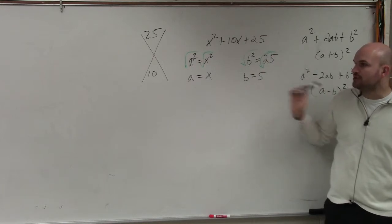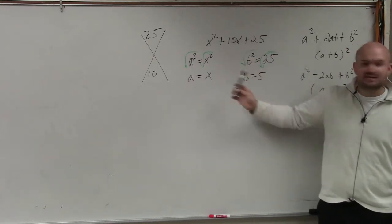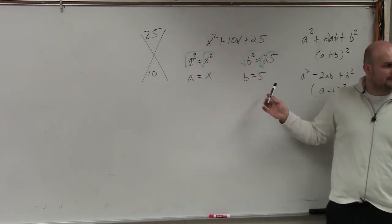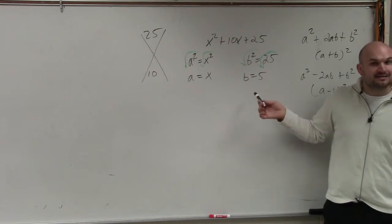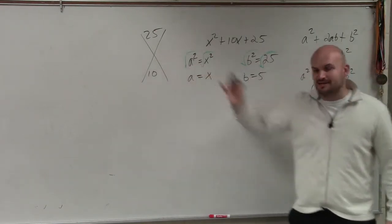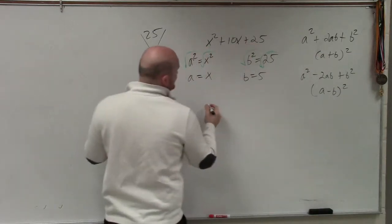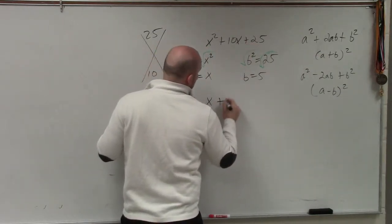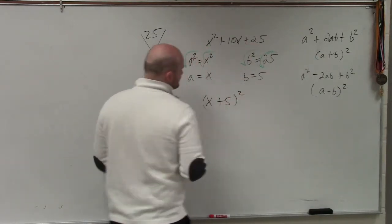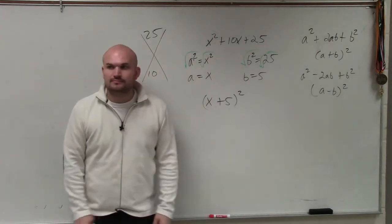And then, is my middle term, is my middle term 2 times x times 5? Yes. So therefore, rather than doing the factoring technique over here, you can simply just say, this is (x + 5)². That's the factored form. Done.